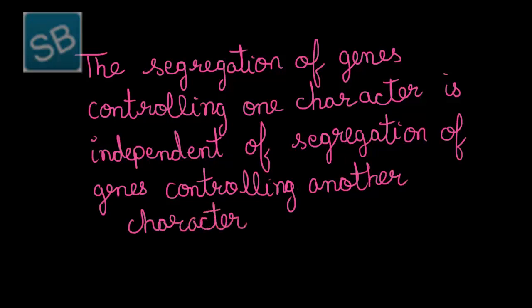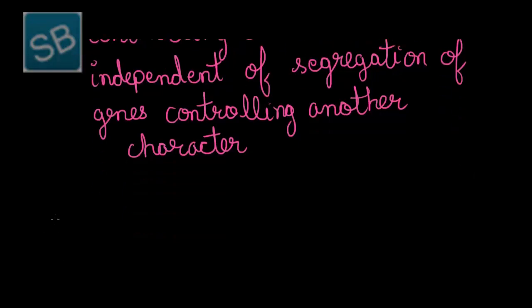According to this law, an independency was established between the segregation of two characters taken into consideration during the dihybrid experiment carried out by Mendel. It was according to this law that a dihybrid cross resulted in the ratio of 9:3:3:1. Such a ratio was observed for several pairs of characters that Mendel took into consideration.